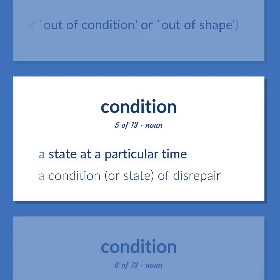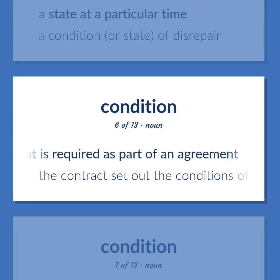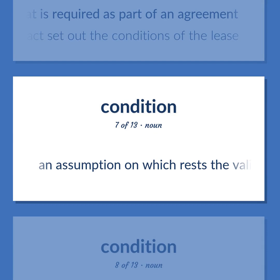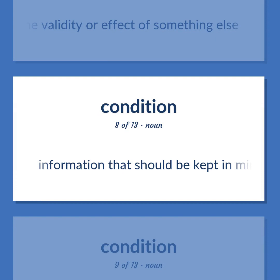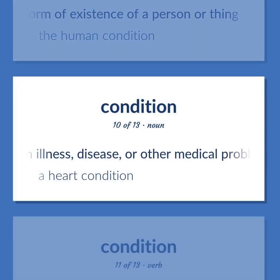Condition: a state at a particular time — a condition or state of disrepair. Usually plural: a statement of what is required as part of an agreement. The contract set out the conditions of the lease. An assumption on which rests the validity or effect of something else. Information that should be kept in mind when making a decision. A mode of being or form of existence of a person or thing — the human condition. An illness, disease, or other medical problem — a heart condition.